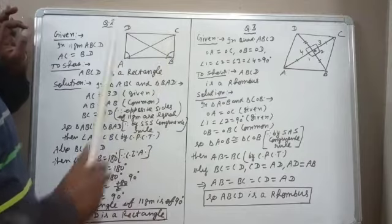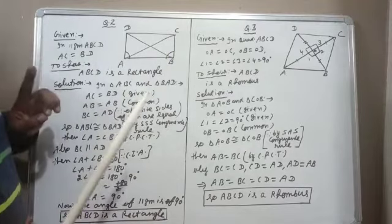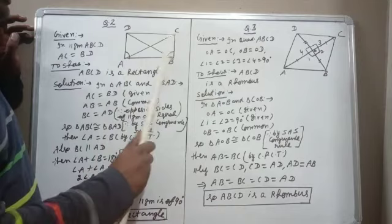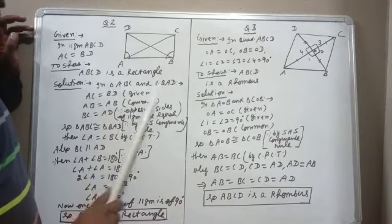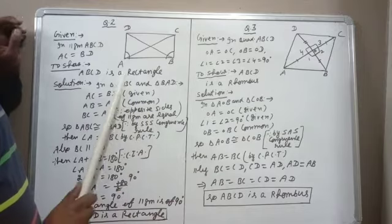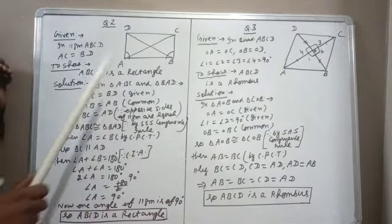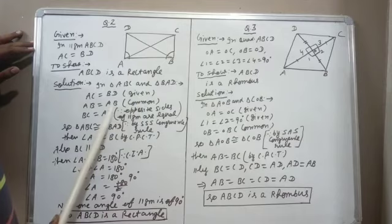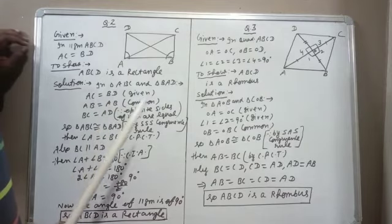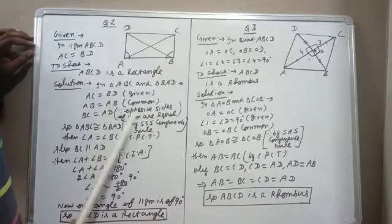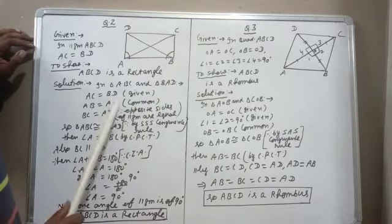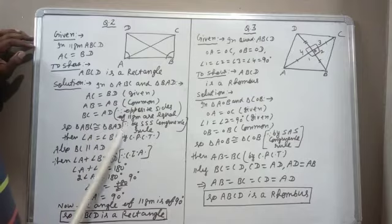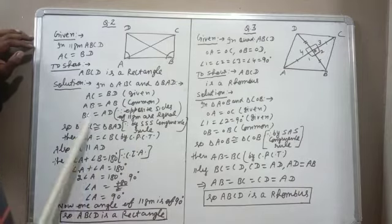To show a figure is a rectangle, we prove all angles are 90°. If it is a parallelogram and we prove one angle is 90°, then automatically all angles will be 90°. We take triangles ABC and BAD and prove congruence. AC = BD is given, AB is common, and BC = AD because opposite sides of a parallelogram are equal. So triangle ABC is congruent to triangle BAD by SSS congruence.